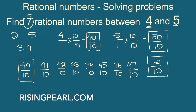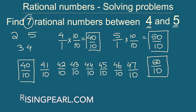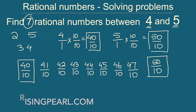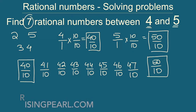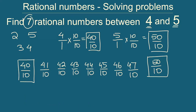So we have 1, 2, 3, 4, 5, 6, 7 — we have found 7 rational numbers between the integers 4 and 5. This is how we solve these problems. I hope you're following along, and if you have not yet subscribed please hit the subscribe button and don't forget to click the bell icon so every day when we upload videos like this you'll be immediately notified.